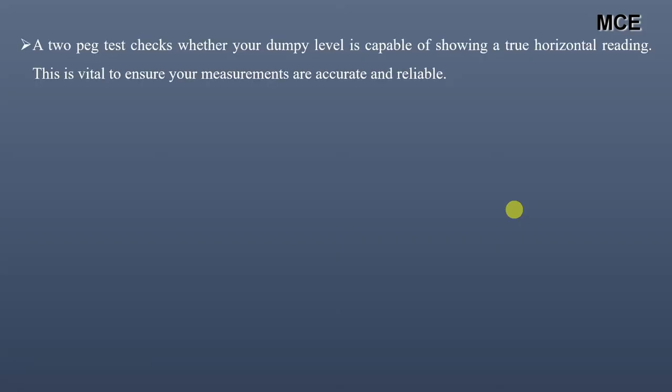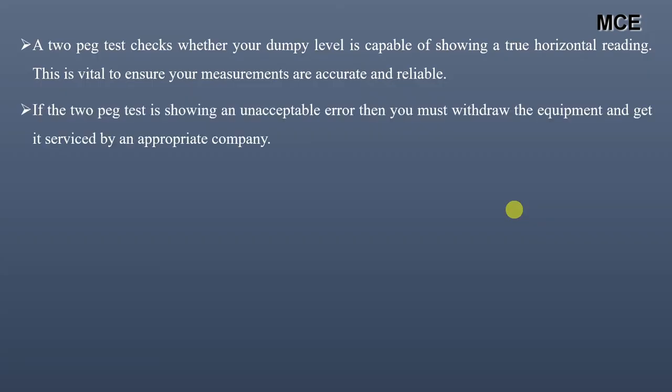First, what is the two peg test of dumpy level? A two peg test checks whether your dumpy level is capable of showing a true horizontal reading. This is vital to ensure your measurements are accurate and reliable. If the two peg test shows an unacceptable error, then you must withdraw the equipment and get it serviced by an appropriate company.